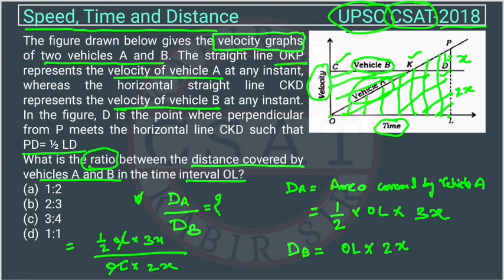OL cancels with OL, and x cancels with x. So this becomes 3 over 2 divided by 2, giving 3 over 4. The ratio is 3 to 4, and the answer is option C. That is the answer.